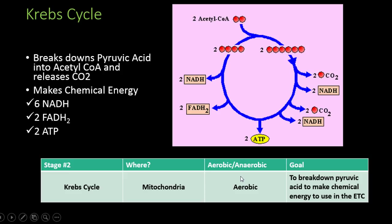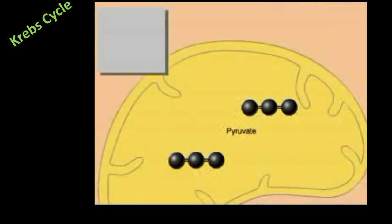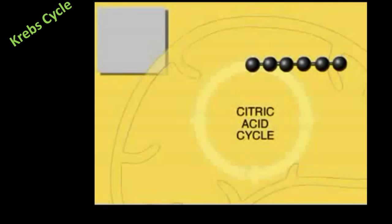The goal is to break down pyruvic acid to make chemical energy to use in the electron transport chain. The oxidation of glucose continues in the citric acid cycle. Pyruvate molecules formed during glycolysis diffuse from the cytosol into the mitochondria, but pyruvate itself does not enter the citric acid cycle. A reaction occurs that removes a carbon atom, releasing it as carbon dioxide, and electrons are transferred to an NADH molecule, storing energy. Coenzyme A joins with the two-carbon fragment, forming acetyl-CoA, and one molecule of acetyl-CoA enters the citric acid cycle.